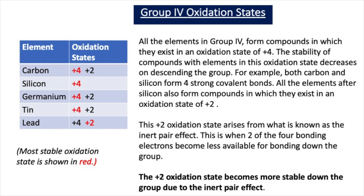From this table you can see that all the elements in group 4 form compounds in which they exist in an oxidation state of plus 4. However, the stability of compounds in this oxidation state decreases on descending the group. Both carbon and silicon form four strong covalent bonds. All the elements after silicon also form compounds in which they can exist in an oxidation state of plus 2, and when we get to lead, the plus 2 oxidation state is actually the most stable. This plus 2 oxidation state arises from what is known as the inert pair effect, where two of the four bonding electrons in the outer shell become less available for bonding down the group.